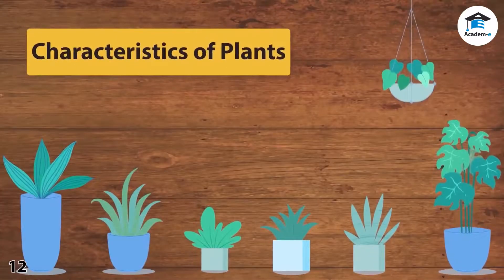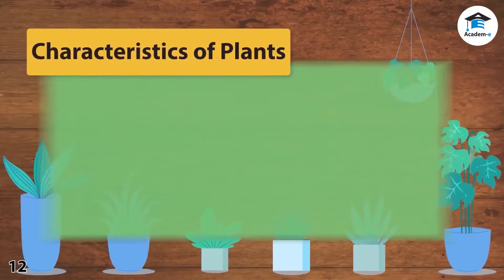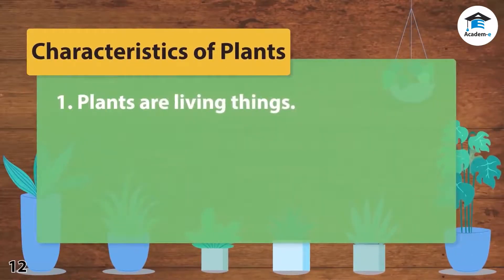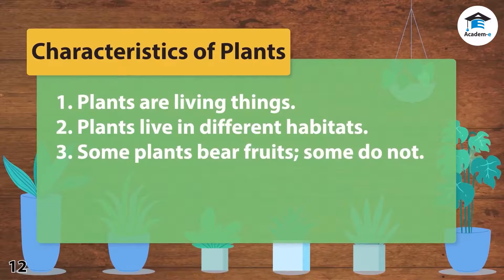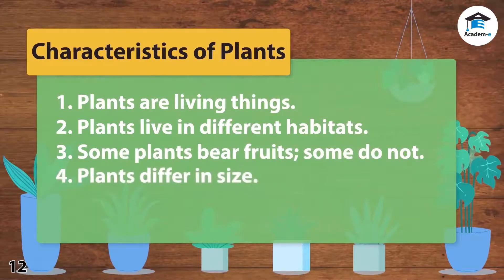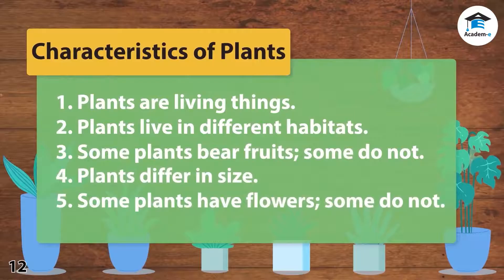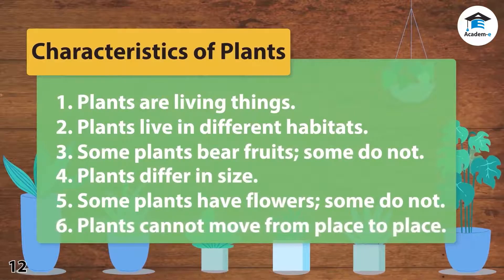Let's wrap up the characteristics of plants. 1. Plants are living things. 2. Plants live in different habitats. 3. Some plants bear fruits, some do not. 4. Plants differ in size. 5. Some plants have flowers, some do not. 6. Plants cannot move from place to place.